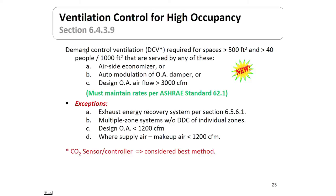Demand control ventilation (DCV) is required for spaces greater than 500 square feet with greater than 40 people per 1,000 square feet — that's why it's called ventilation control for high occupancy. It's also required if the building is served by an air-side economizer, if you modulate an outdoor air damper, or if your design airflow is greater than 3,000 CFM. One important note: in maintaining ventilation control, you must not violate ASHRAE Standard 62.1, which mandates certain outdoor air requirements for indoor air quality and health.